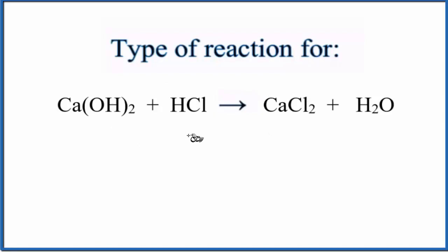So the first thing we really need to know to figure out the type of reaction here is that if we have this OH, this is called a hydroxide group. If it's bonded to this metal here, that's going to be a base.